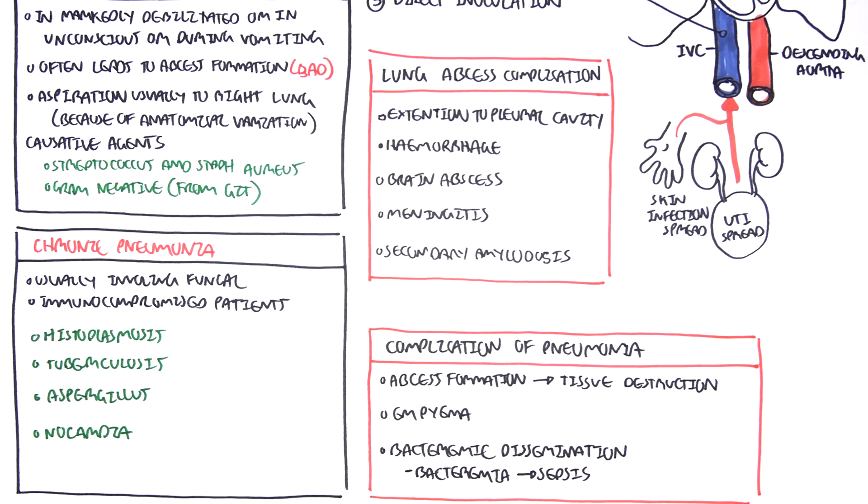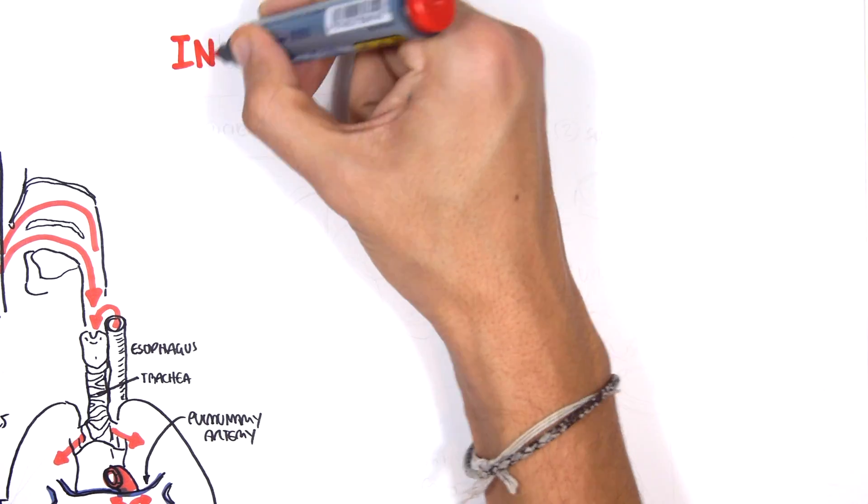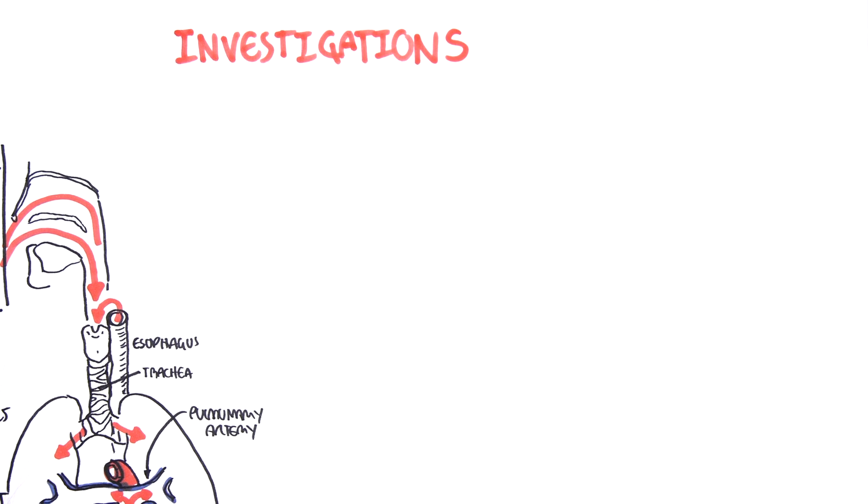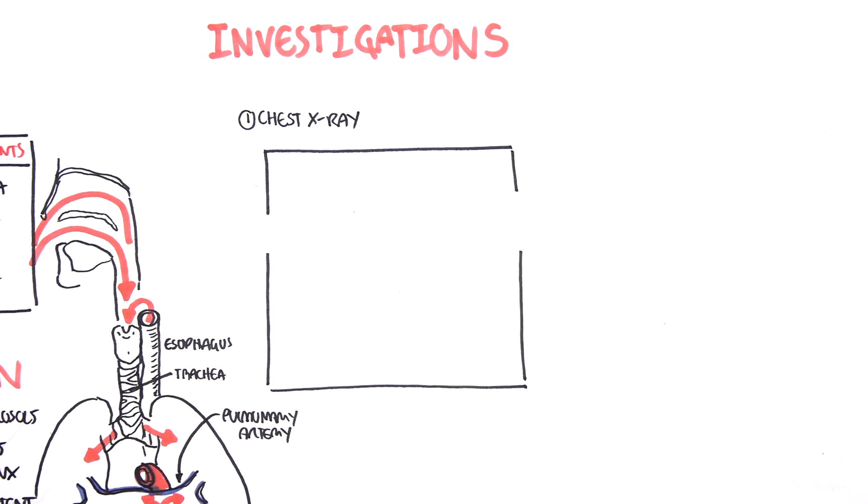So when a patient presents with signs and symptoms of a lung infection, it is important to perform investigations to rule out certain things and to diagnose pneumonia. So things that we can do. Chest x-ray. We can see and potentially diagnose the type of pneumonia using a chest x-ray, according to where it affects the lungs.